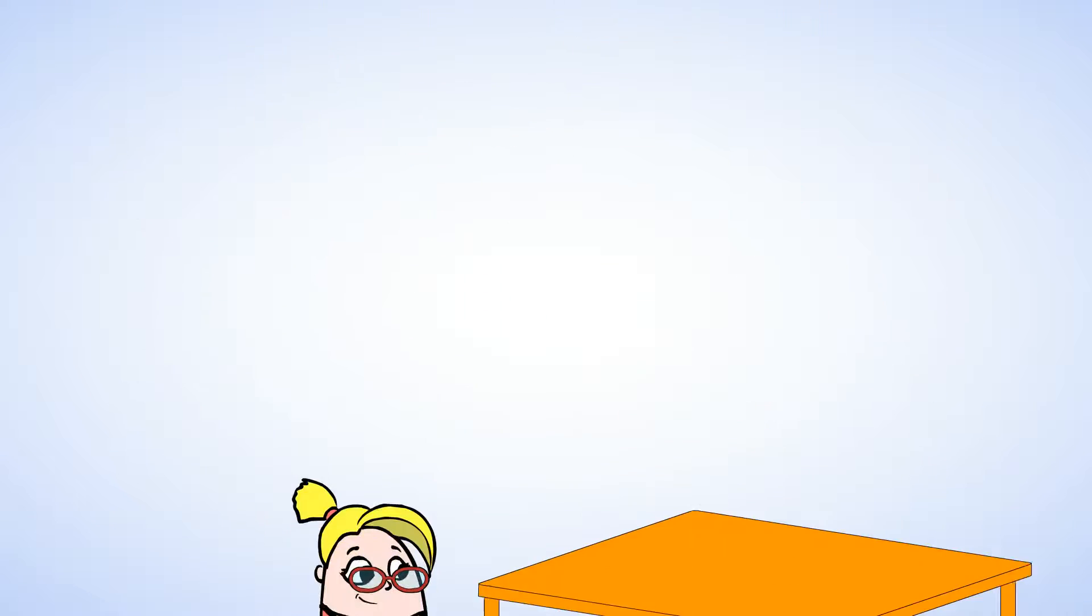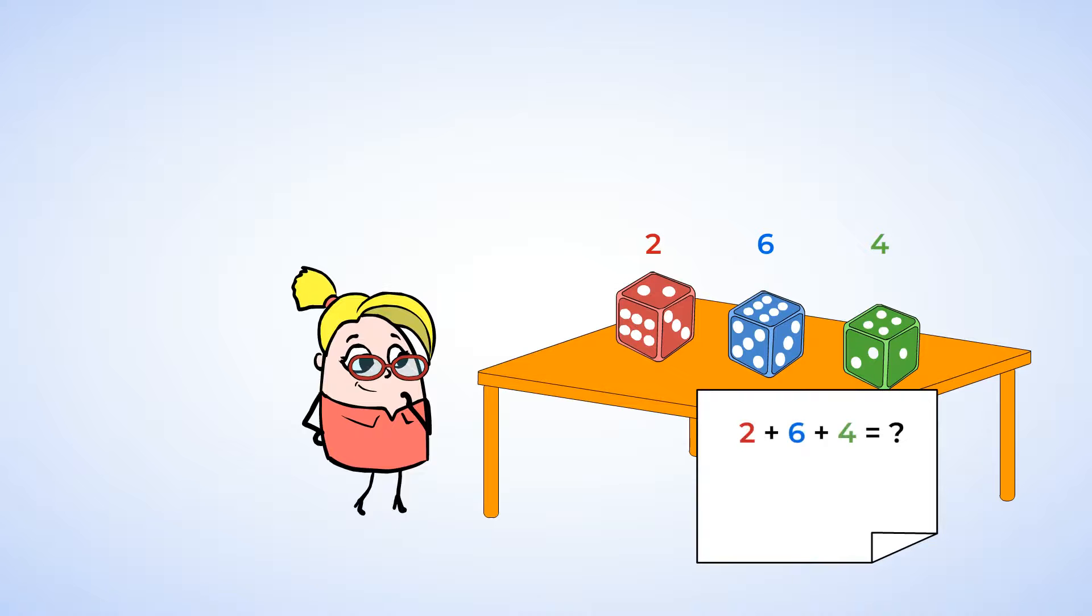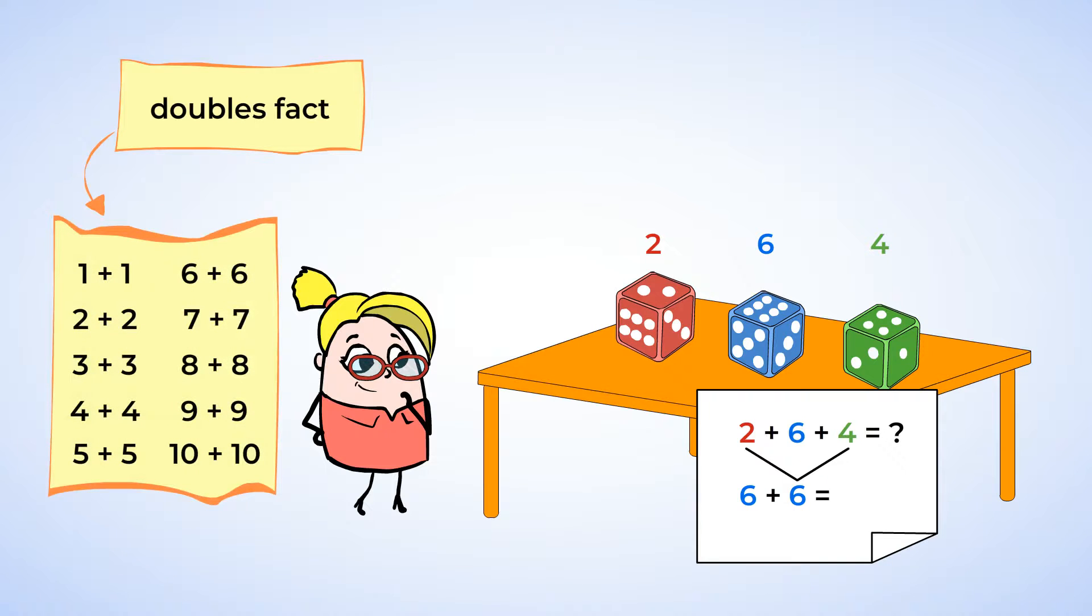Let's try it one more time. Jenny rolls the dice again. This time, the addends are two, six, and four. Jenny looks at the addends carefully. She already knows that two plus four equals six, and so she will group those two addends together to make a six. And now she has to add six plus six. When both addends are the same, this is called a doubles fact. And Jenny has memorized many doubles facts, and she knows that six plus six equals twelve.